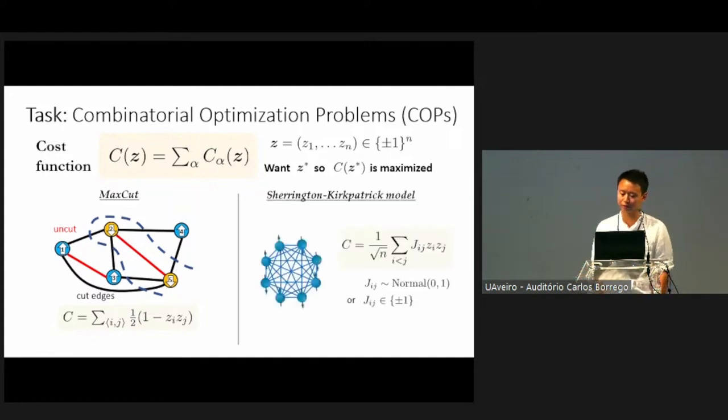Another example is the Sherrington-Kirkpatrick spin-glass problem. Here you're trying to maximize the energy of an all-coupled spin system with random sign couplings, where the couplings can be chosen from the standard normal distribution or uniformly from plus or minus one. There are many optimization problems that we encounter in real world applications. A big open question in the field is, is there any possible or convincing quantum advantage for solving them?